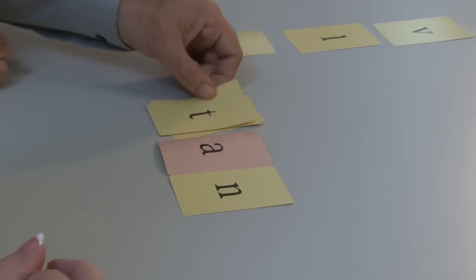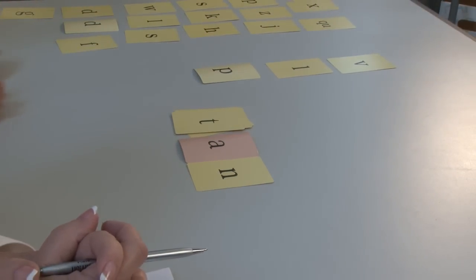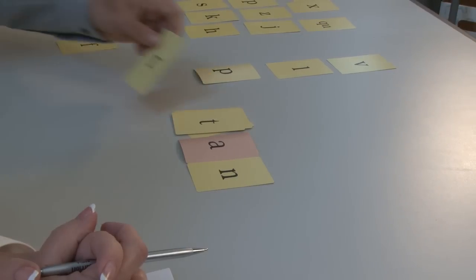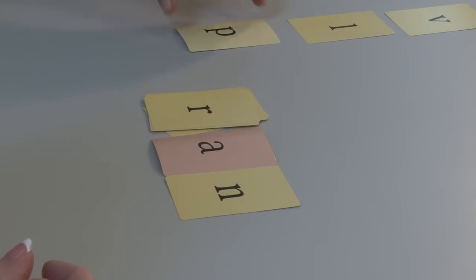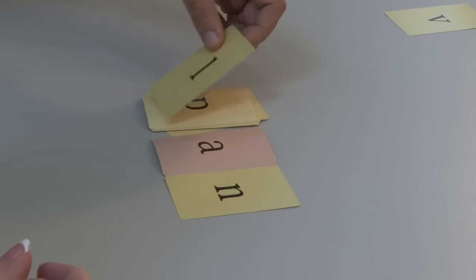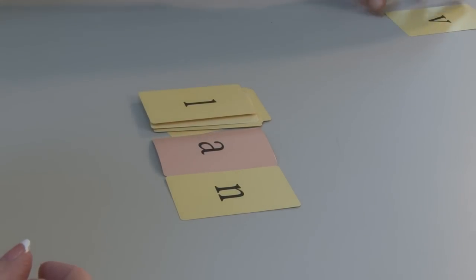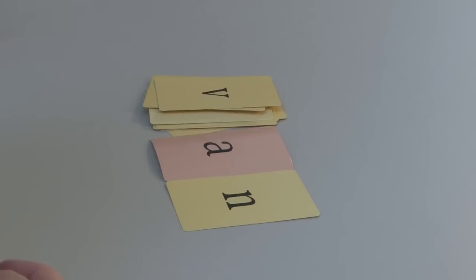T-a-n. Good. And an r makes it? R-a-n. Good. Ran. And with a p? Pan. Good. Now you have pan. L-lan. With the l is lan. Van. Good. So, Jonathan, we did the letter family of a-n.